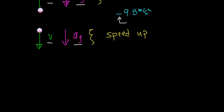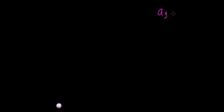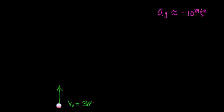Let's do an example to develop a conceptual understanding of how gravity influences the motion of an object thrown into the air. We'll approximate the acceleration due to gravity as negative 10 meters per second squared — meaning gravity changes the velocity of an object by 10 meters per second every single second. We'll take a ball and throw it straight up with an initial velocity of 30 meters per second. The moment the ball leaves your hand, gravity accelerates it downward at negative 10 meters per second squared.